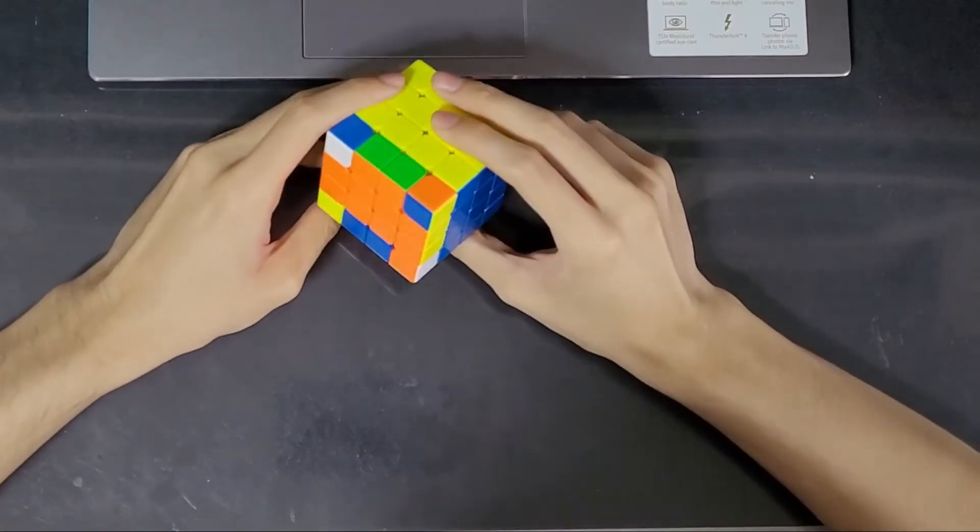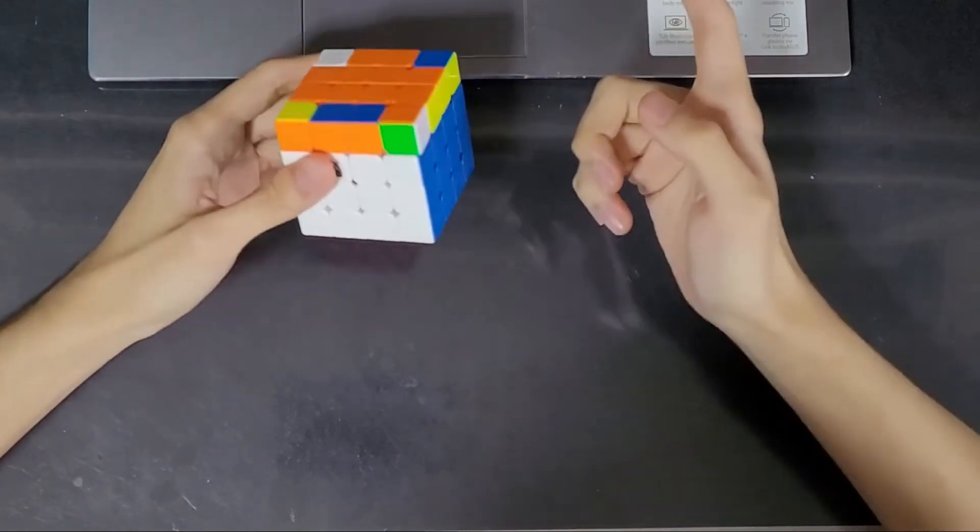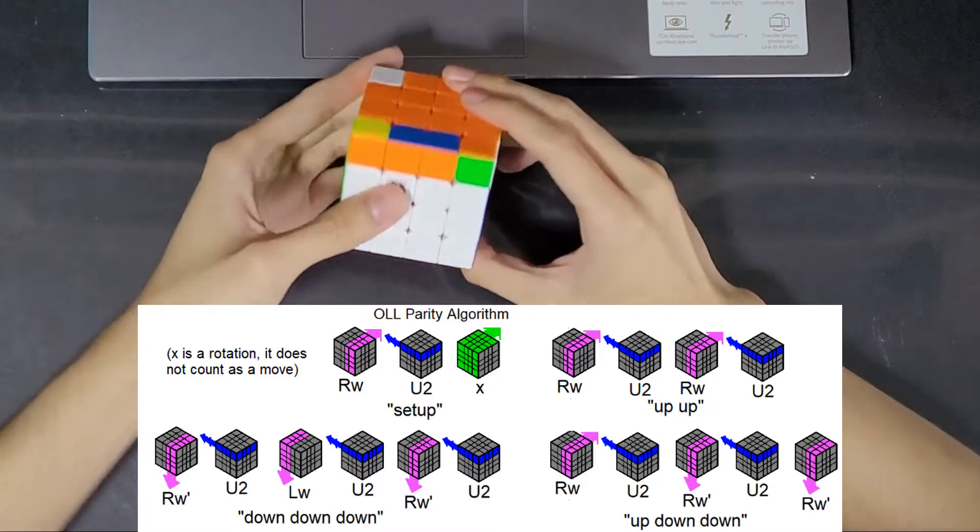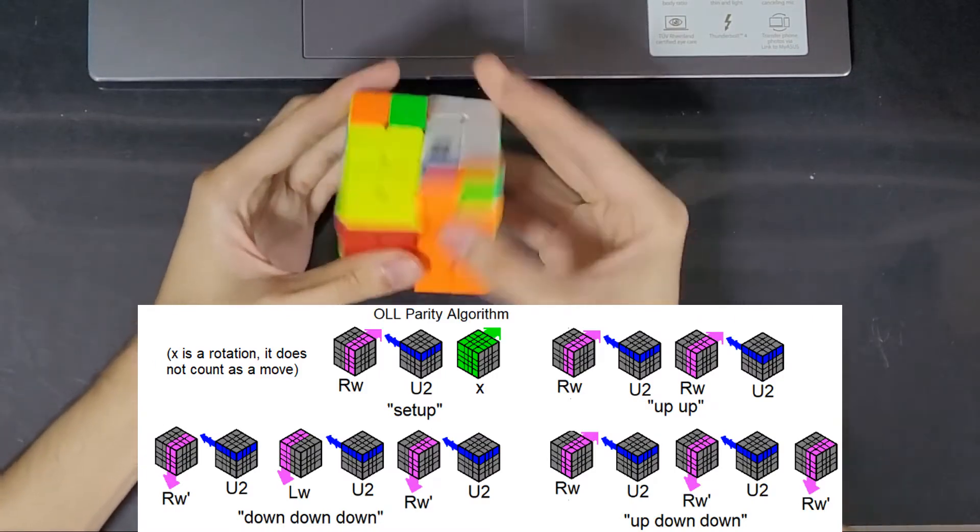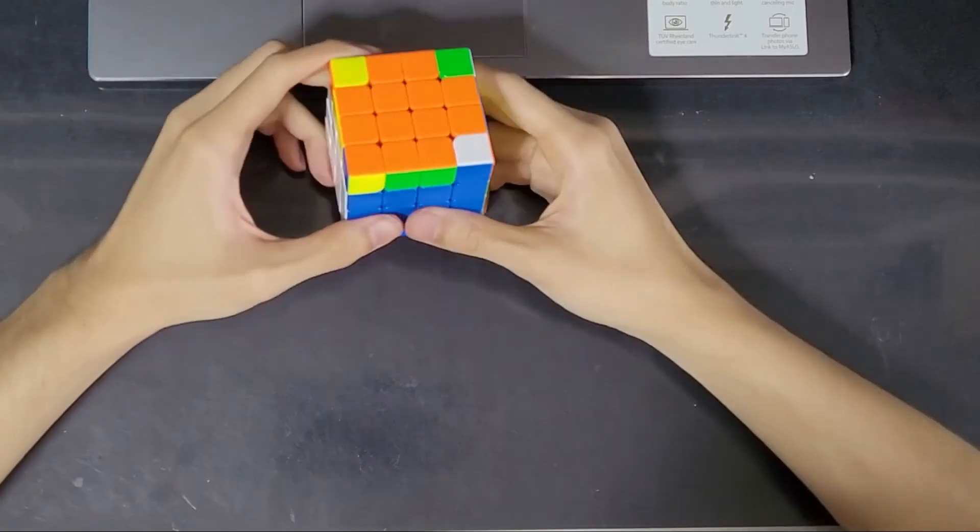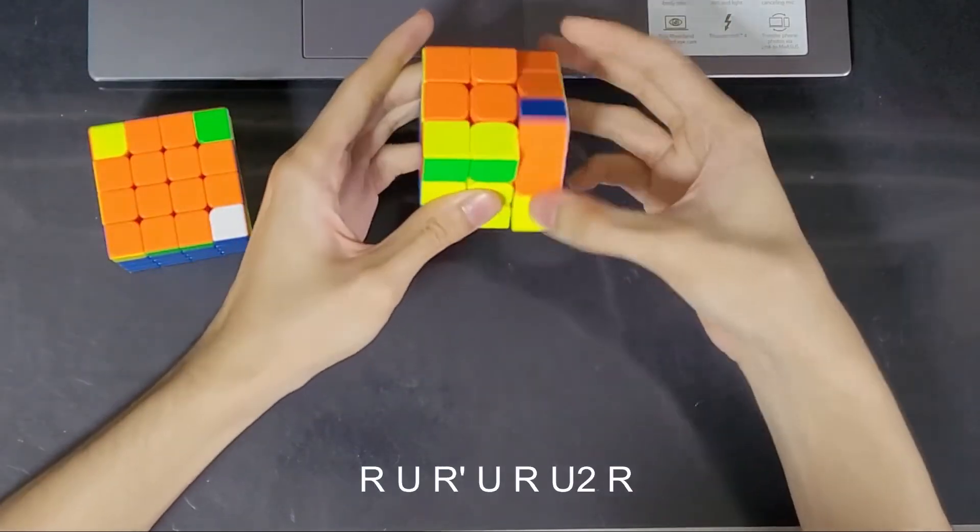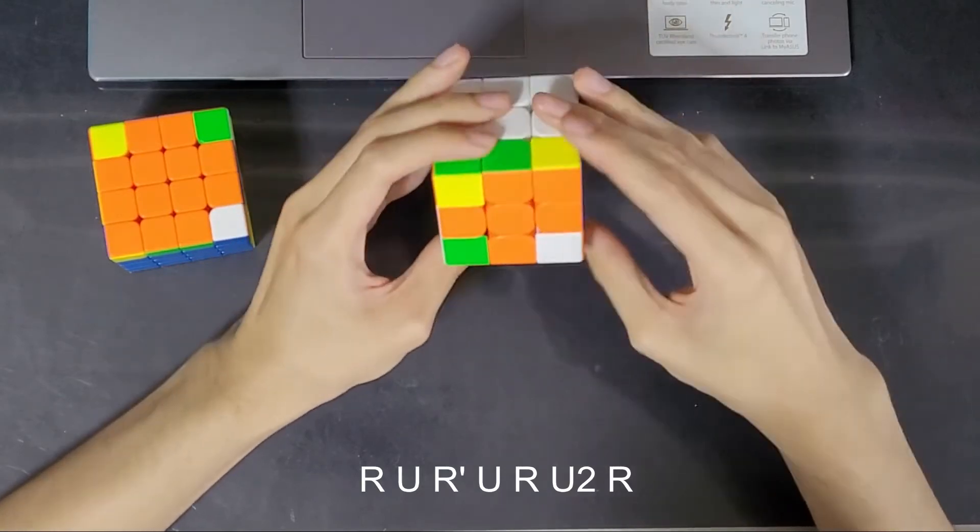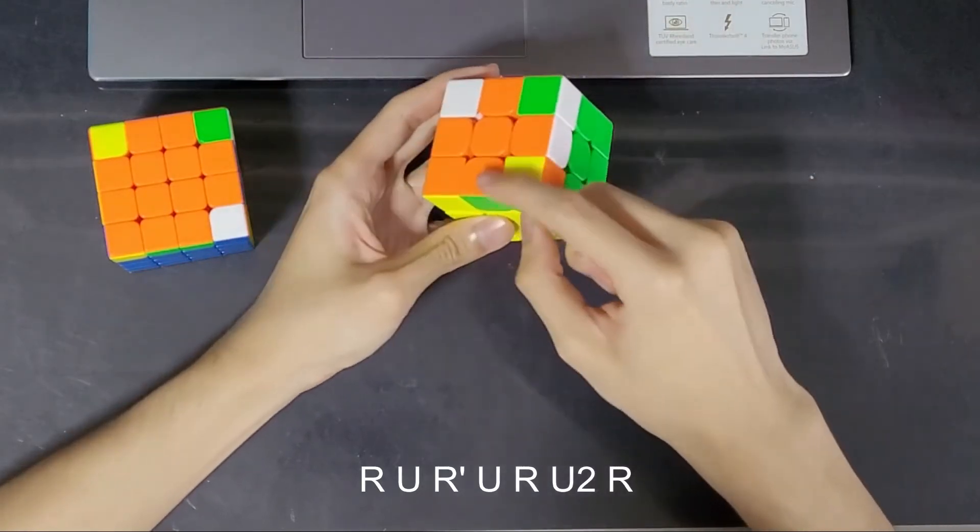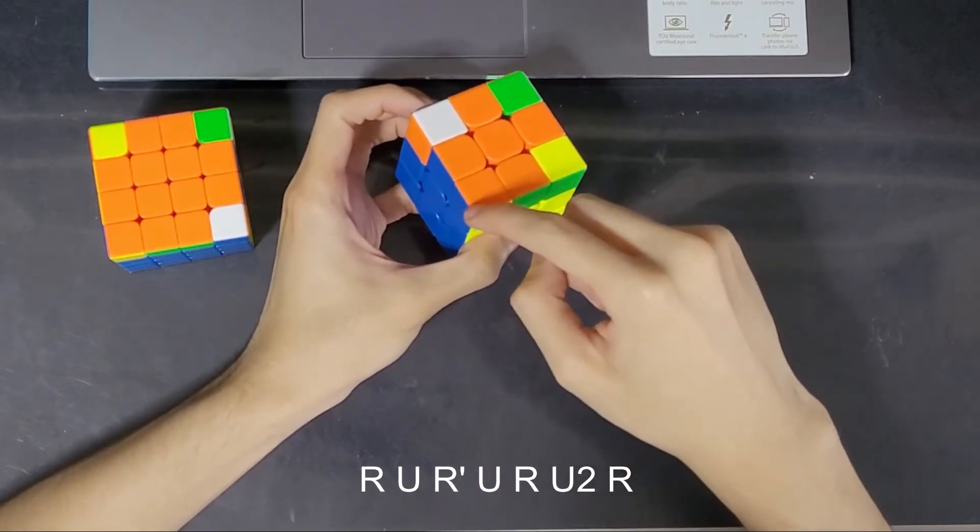Now going through the second approach of the beginner method. The first step is again to solve all 4 edges. So if we have an odd number we need to do that. The next step is to do this algorithm that twists 3 corners. So this algorithm will twist 3 corners like that. And it will actually preserve the one in the front left.